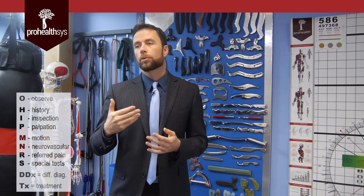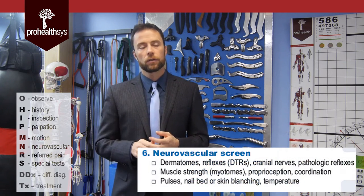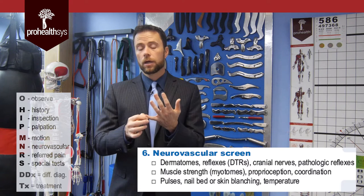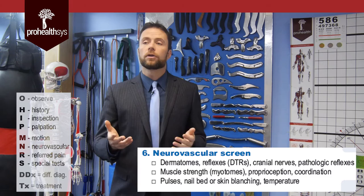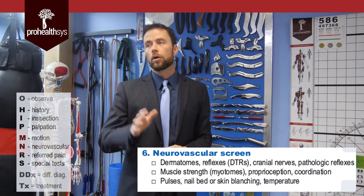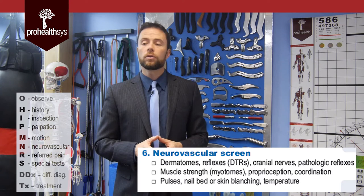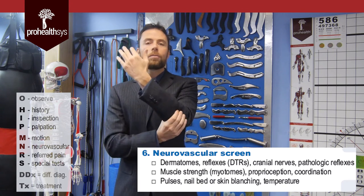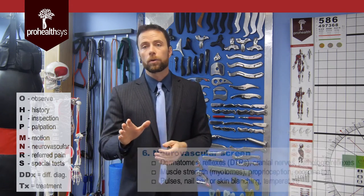After your motion assessment, you're going to progress into a neurovascular screen if it's indicated. Neuro means motor strength — which you may have already assessed with resisted testing — sensation in the skin, and deep tendon reflexes. Those are the main parts of the neuro exam. If a more detailed exam is required, you can move into a cranial nerve exam. For your vascular screen, that includes things like capillary refill anywhere on the body, temperature assessment, and potentially peripheral pulses if indicated.